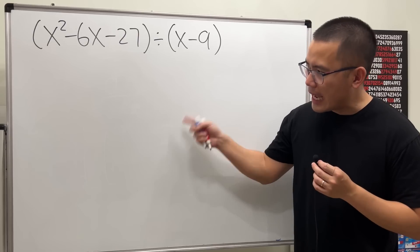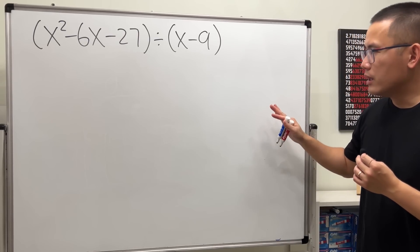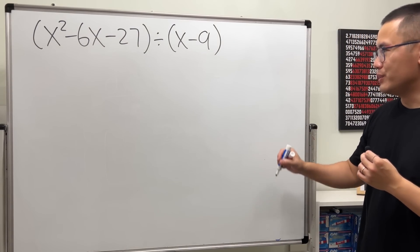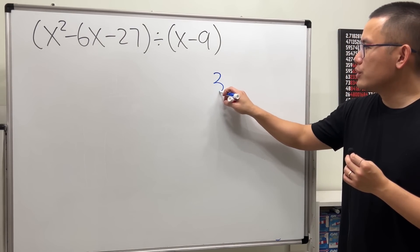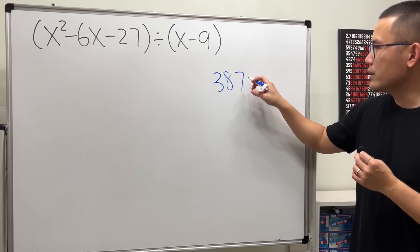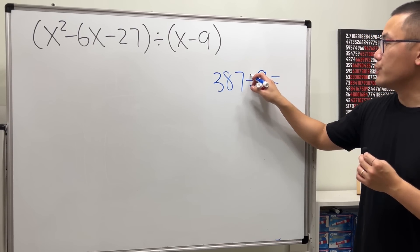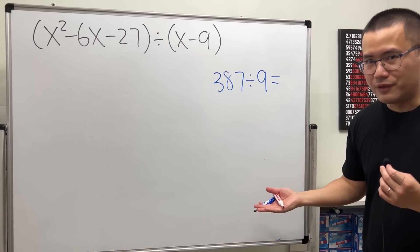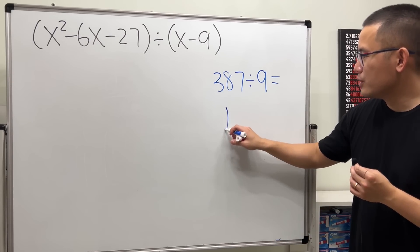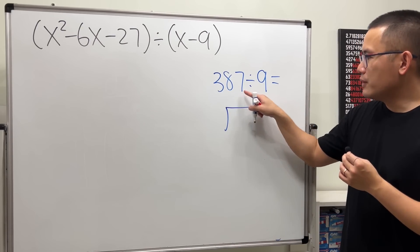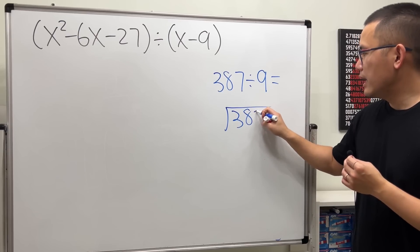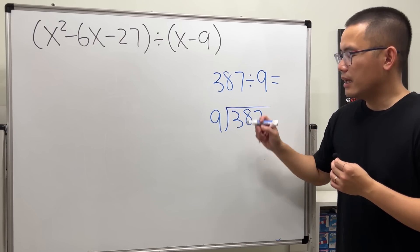Before I show you that, I'd like to review the regular long division with you. Let's say we have 387 and we want to divide this by 9. So how do we do it? Well, long division, the regular version. Draw this, put the first thing inside, and then the second thing on the outside, and just proceed.